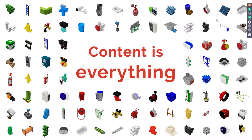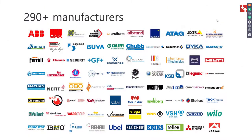Why is this? Content is used at the start of every construction project nowadays, and content is the basis for many projects. If content used in a project is not correct, it will influence the quality, it will influence the calculations made in projects, and it will influence the eventual realization. Content is really important and more and more used for, for example, prefab projects. We think it's very important to have high-quality content for engineers, and this is why we are cooperating with more than 290 manufacturers to offer MEP engineers content on our platform.